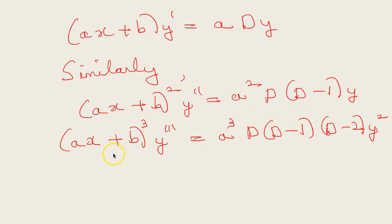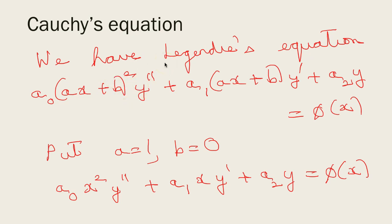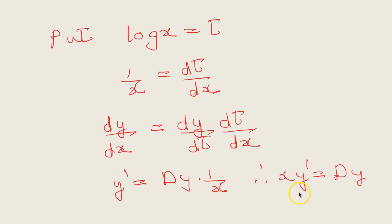Continuing, (ax + b)² y'' = a²D(D−1)y, and (ax + b)³ y''' = a³D(D−1)(D−2)y, and so on. Cauchy's equation is a special case of Legendre's equation where we put a = 1 and b = 0, giving: a₀x²y'' + a₁xy' + a₂y = φ(x).